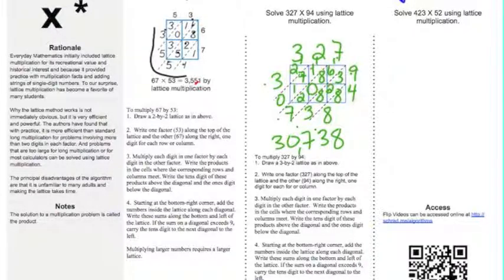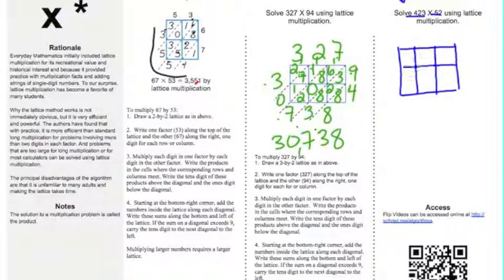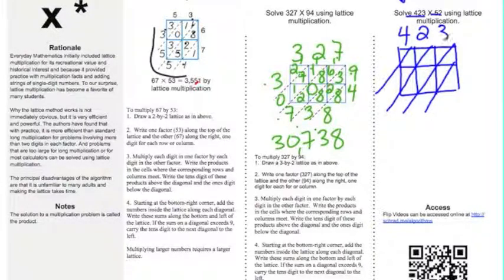All right, I've got a three-digit number in 423, so I need a three-digit box at the top, and I need a two-digit box on the side for the 52. So I'm going to get a rectangle here. I need to draw my lattices. This is the hardest part of the whole process, really, once you get it done, is to make sure your lattices look neat and tidy, and I'm going to put in my factors, 423 times 52.